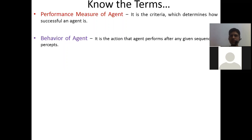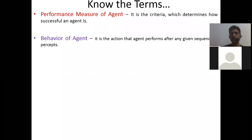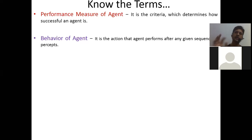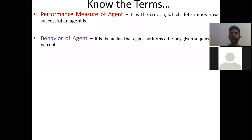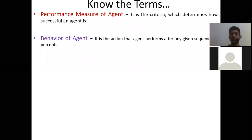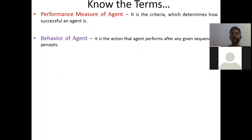Behavior of an agent is also an important aspect. It is the action that an agent performs after any given sequence of percepts — how an agent is going to behave depends upon the percepts it is gaining through the perceptors. Just like humans have five senses to sense everything in the environment and then react, that reaction is the behavior. For example, if you touch fire and your skin burns, how you react — crying or pulling away — is your behavior.